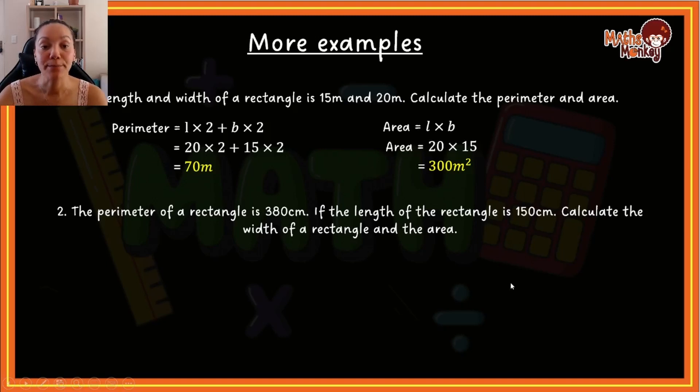Now the second one, it says the perimeter of a rectangle is 380 centimeters. If the length of the rectangle is 150 centimeters, calculate the width of a rectangle and the area. Here in this question they already calculated the perimeter, and they're telling you that the perimeter is 380, and that the length of one of the sides is 150 centimeters. So what they want you to do is what is the other side of the rectangle and what is the area. I know this sounds a little complicated, but just bear with me here.